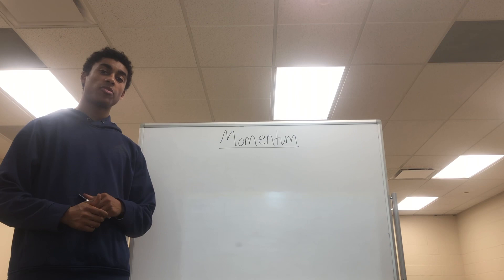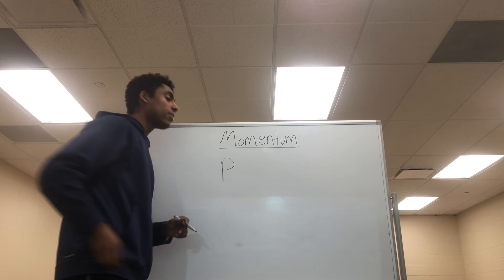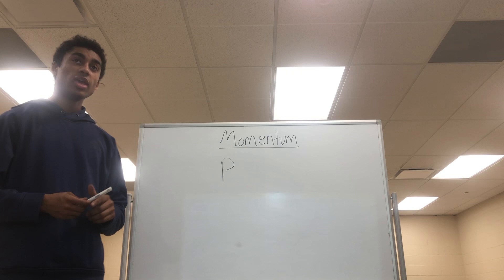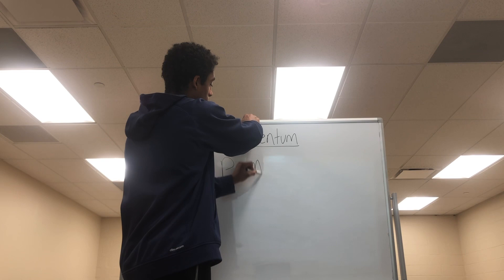Momentum, or P, can be described as the quantity of motion possessed by a moving object. We can calculate momentum by multiplying the mass of this object by the velocity that it is traveling at.